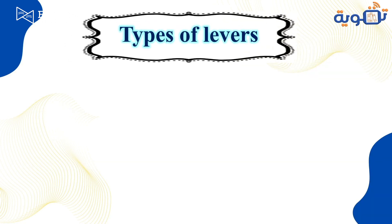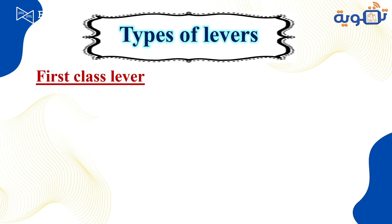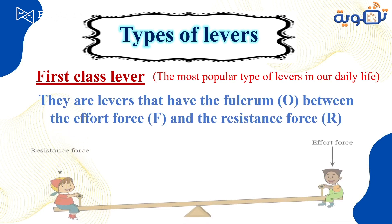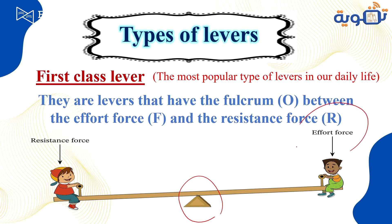Now let's look at the types of levers. We have three types. The first one is the first class lever. How do we identify the class of a lever? It depends on the position of the fulcrum, resistance, or effort force. If the fulcrum is located between the effort force and the resistance force, it is a first class lever.